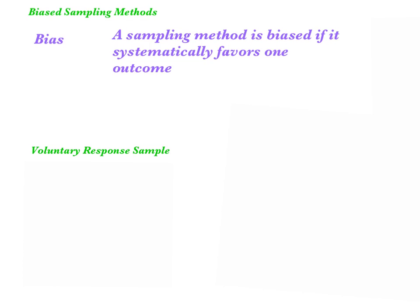This video is all about biased sampling methods. A sampling method is said to be biased if it systematically favors any of the outcomes over any other. We're talking about the design of the sampling method here, not the wording of the question or other elements that can create response bias. Here we're talking about whether the design of the sampling method is going to favor one outcome over the other.